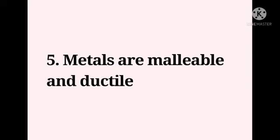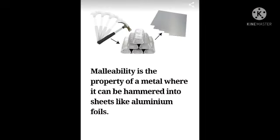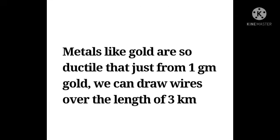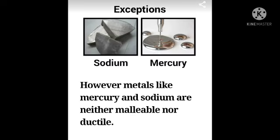Fifth, metals are malleable and ductile. Malleability is the property of a metal where it can be hammered into sheets, like aluminium foil. Ductility is the property where a metal can be drawn into wires, such as copper wire used in electric wiring. Metals like gold are so ductile that from just one gram of gold we can draw a wire over a length of 3 km. However, metals like mercury and sodium are neither malleable nor ductile.